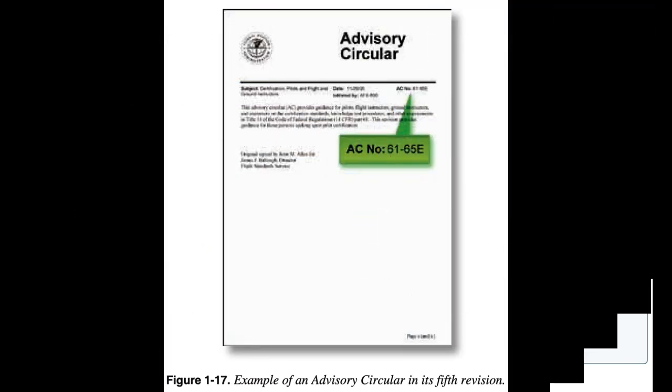Advisory Circulars (ACs). An AC is an informational document that the FAA wants to distribute to the aviation community. This can be in the form of a textbook used in a classroom or a one-page document. Some ACs are free while others cost money. They are to be used for information only and are not regulations. The FAA website provides a database that is a searchable repository of all aviation safety ACs. All ACs, current and historical, are provided and can be viewed as a PDF copy. ACs provide a single, uniform, agency-wide system that the FAA uses to deliver advisory material to FAA customers, industry, the aviation community, and the public.